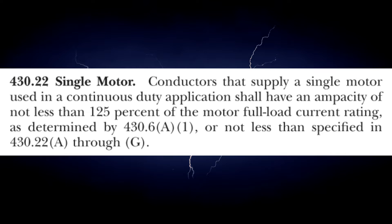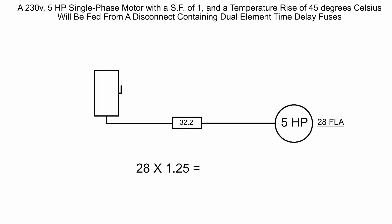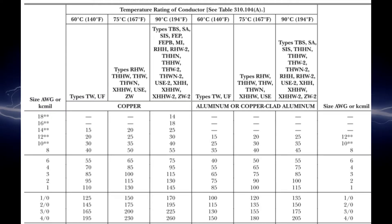Anything in a commercial facility will be a continuous duty application. One of the few examples that wouldn't qualify would be like a garbage disposal in a house. When taking these exams and you get motor calculations, 99.9 percent of all the exams in this country are going to use continuous duty applications. That's basically the testing standard. We'll take our full load amps at 28 times 1.25 or 125 percent and we will come up with 35 amps. That's what we're going to factor and use in order to size our wire, which we will do over in 310.15(b)(16).